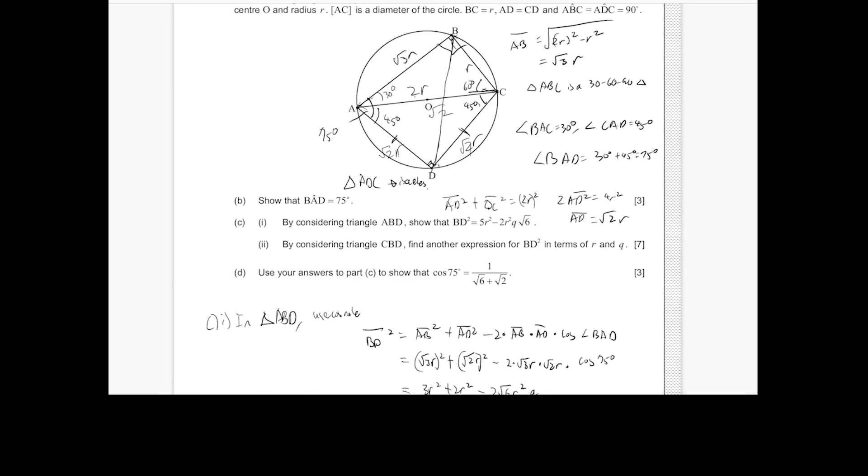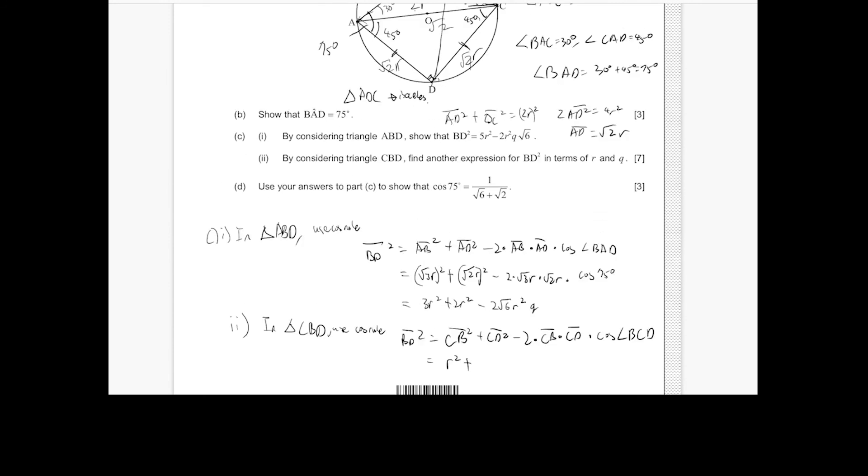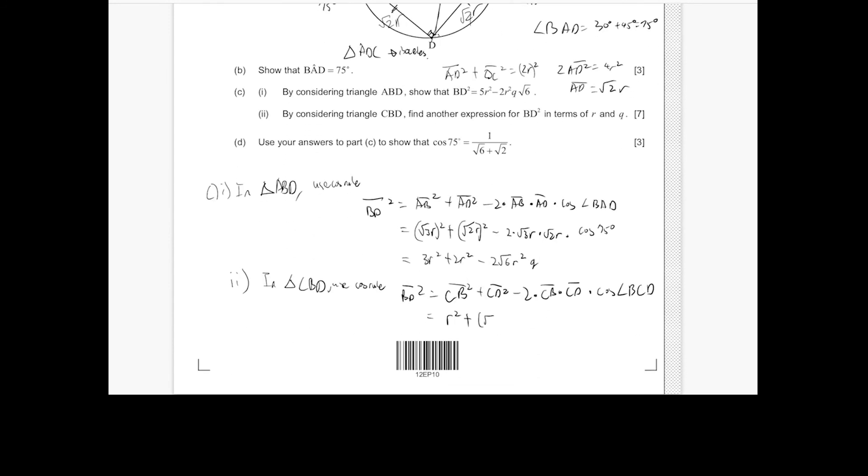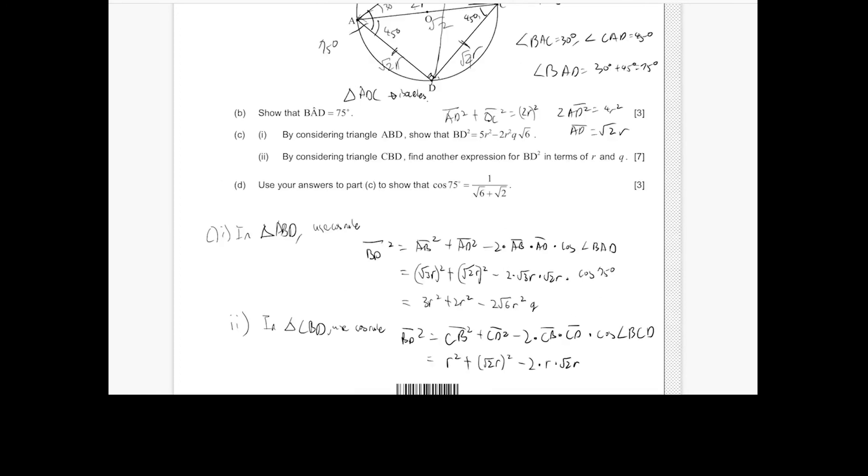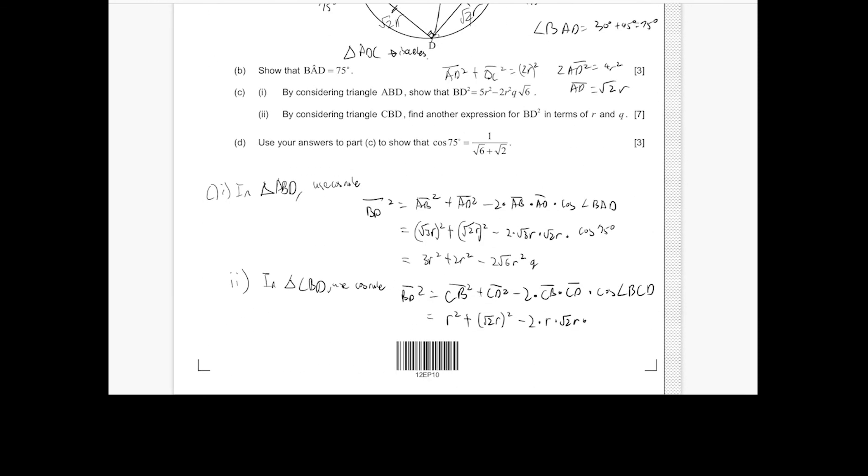So we know that CB is going to be R. R squared plus CD is going to be root 2R. So root 2R squared minus 2 times R times root 2R times cosine BCD. So we know that BCD is 105 degrees.